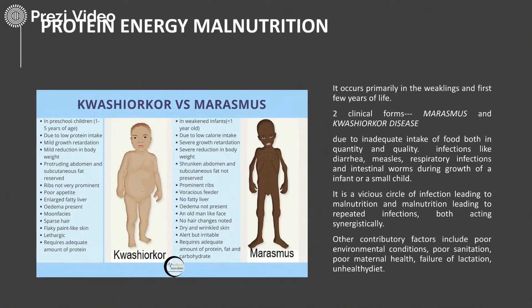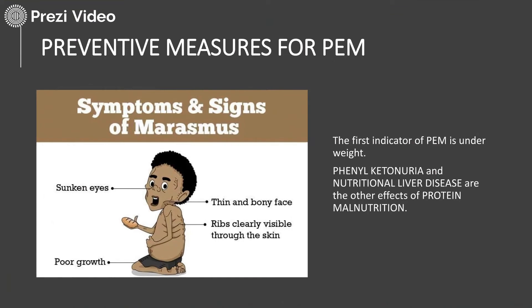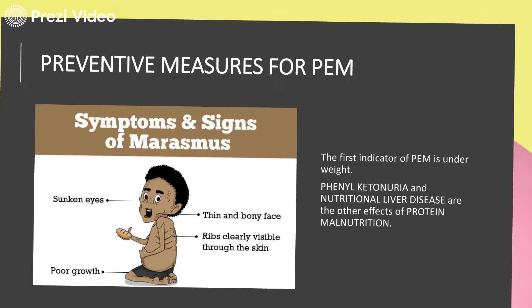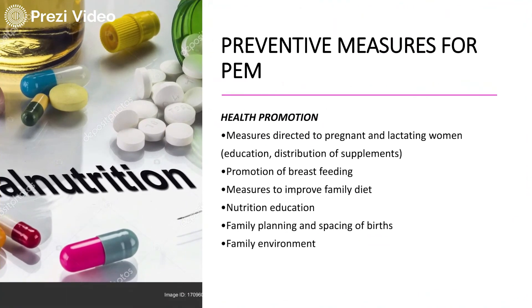Talking about protein energy malnutrition, there are two diseases associated with protein deficiency: marasmus and kwashiorkor. These occur due to inadequate intake of proteins in quantity and quality. Infections like diarrhea, measles, and respiratory infections may also take place, creating a vicious cycle of infections leading to malnutrition and further repeated infections. Causes may also be attributed to poor sanitation, poor maternal health, failure of lactation, and unhealthy diet. Indicators of protein deficiency include underweight, phenylketonuria, and nutritional level disorders.